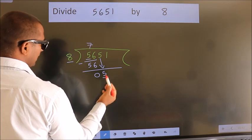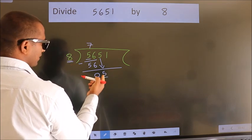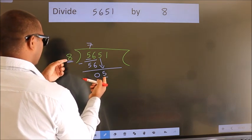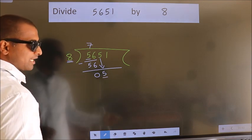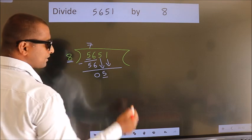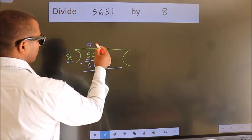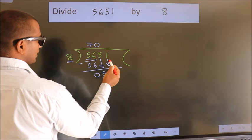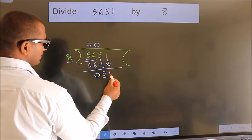Here we have 5, here 8. 5 smaller than 8. So we should bring down the second number. And the rule to bring down second number is put 0 here. Then only we can bring down this number.